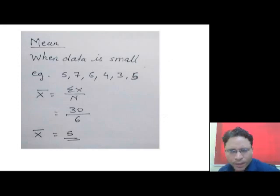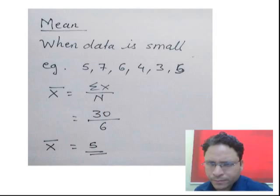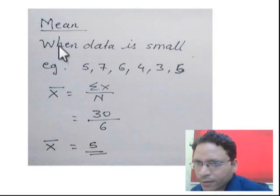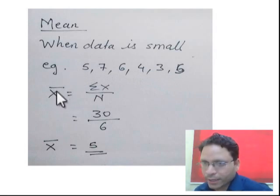Now here, how to calculate mean. When you get data in a small series, like 5, 7, 6, 4, 3, 6, how to calculate mean? Very simple method is there. The formula to calculate mean is x̄ = Σx/n. Summation x means you have to add all these numbers, and divide by n, which means how many values are there.